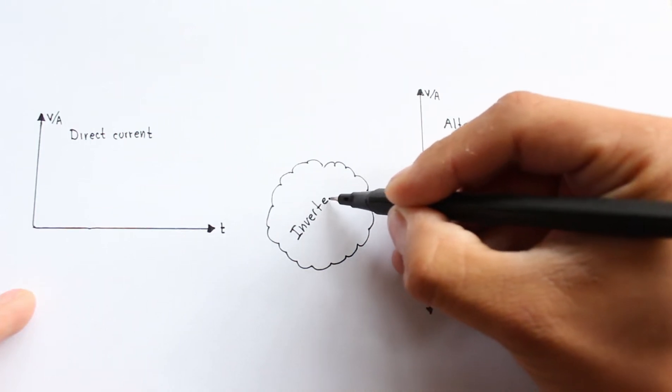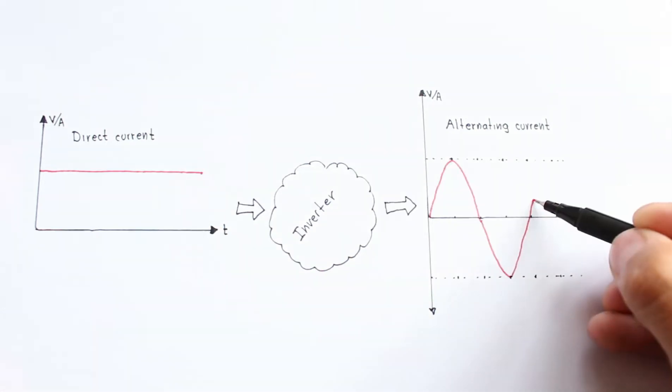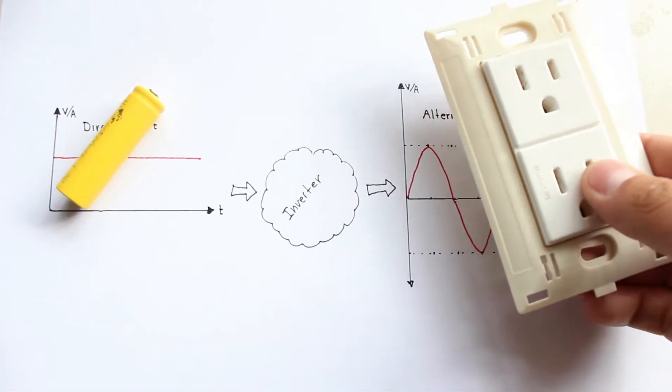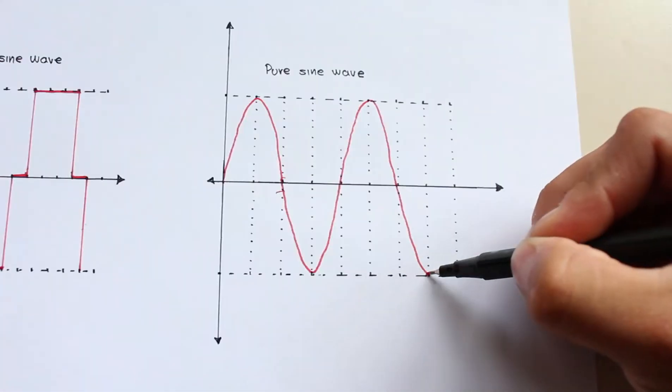An inverter is an electrical circuit that converts direct current into alternated current, like for example the current from a battery to the main outlet. There are two kinds of inverters, modifying sine wave and pure sine wave inverters.